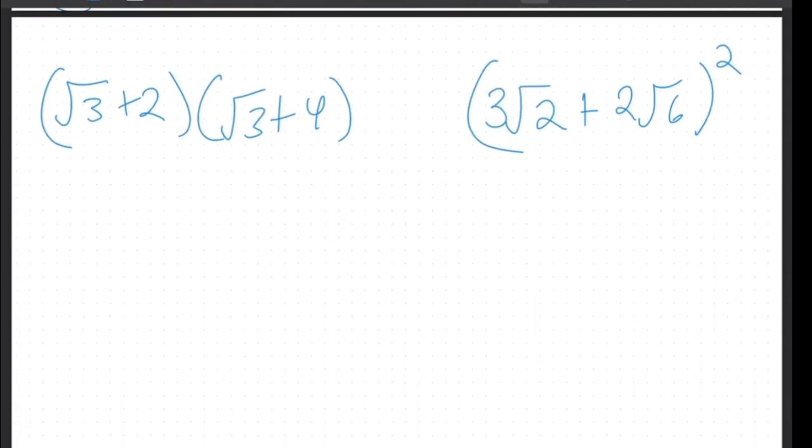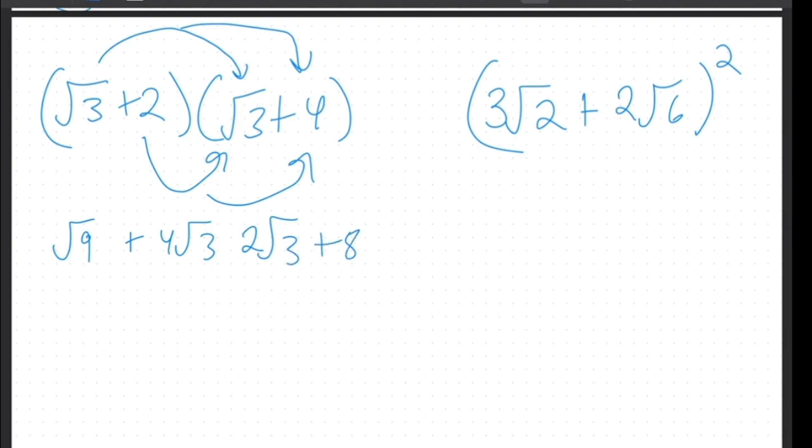Try doing these examples. So in this one, remember to FOIL it properly. So we would get square root of 9 for the first one. Root 3 times 4 would be 4 root 3. And then 2 times root 3 would be 2 root 3 plus 8.